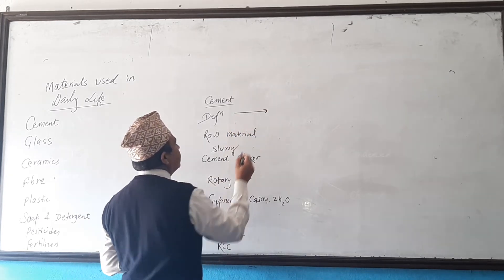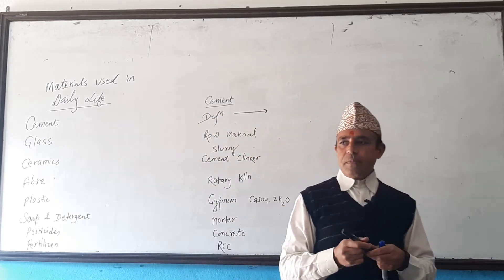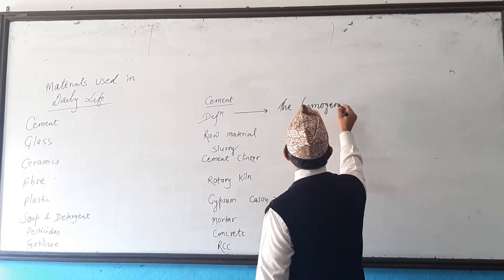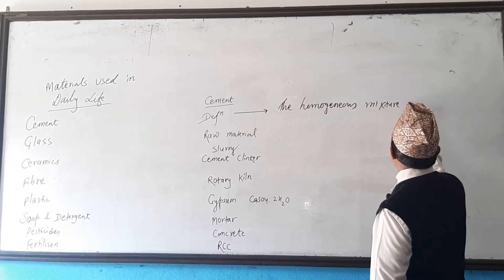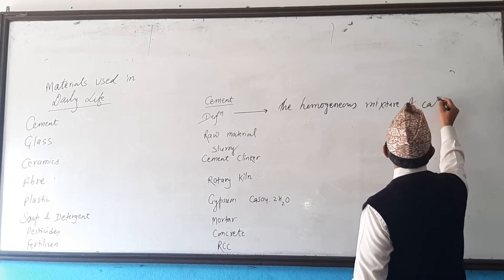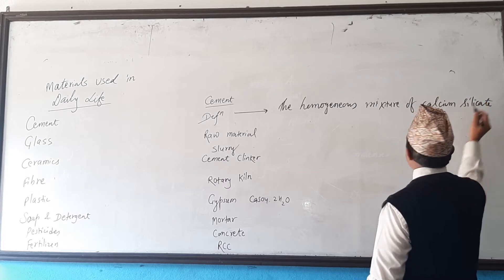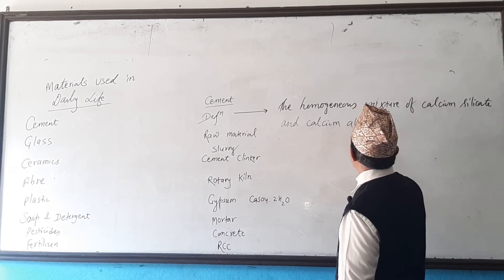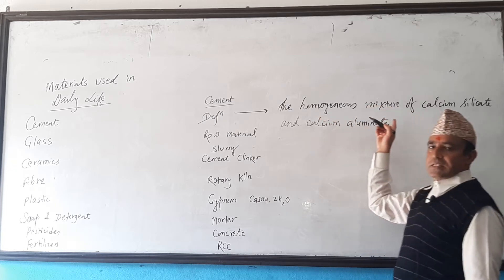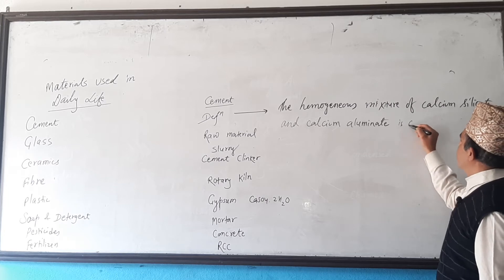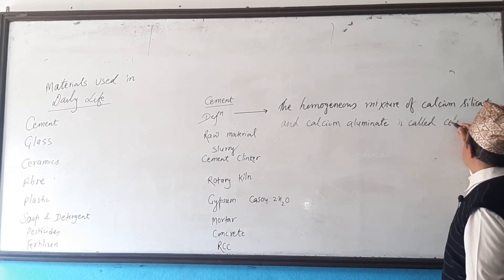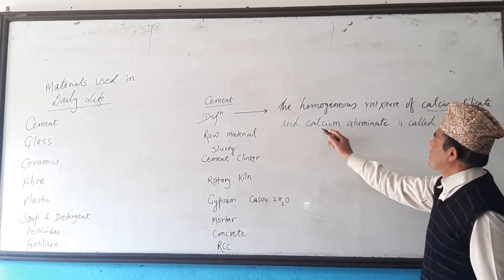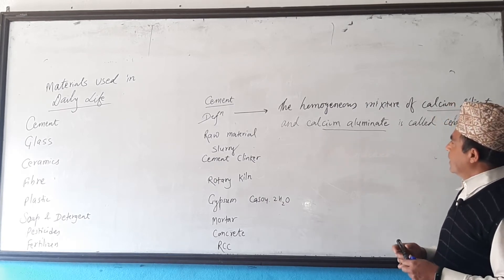Dear students, can you say the definition of cement? Cement is defined as the homogeneous mixture of calcium silicate and calcium aluminate. The chemical compounds present in cement are calcium silicate and calcium aluminate, and it is a grey powder.